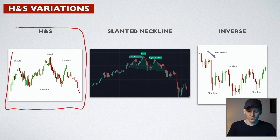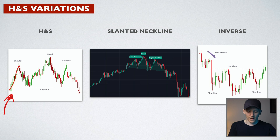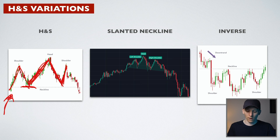A normal head and shoulders is a bearish pattern. You get the uptrend, then the first shoulder and a sell-off into the neckline, then the head which is a higher high, another sell-off into the neckline, then the third attempt — the second shoulder — which doesn't come as high as the head. That third shoulder shows very weak momentum where buyers are unable to force the price up anymore. You then take the short position on the breakout of the neckline.